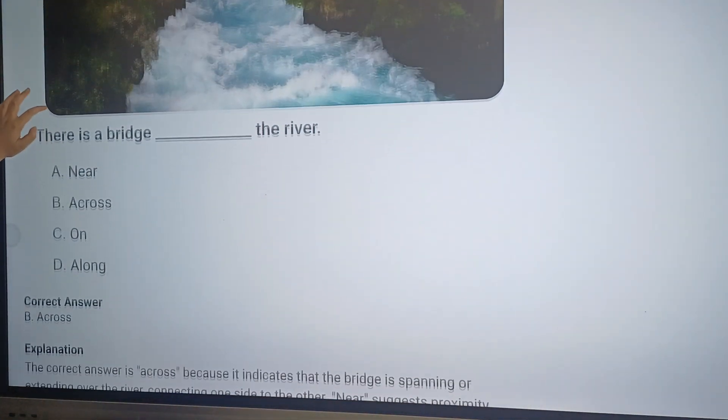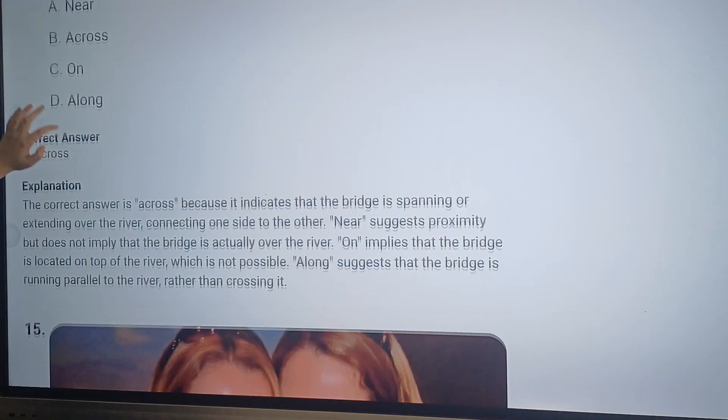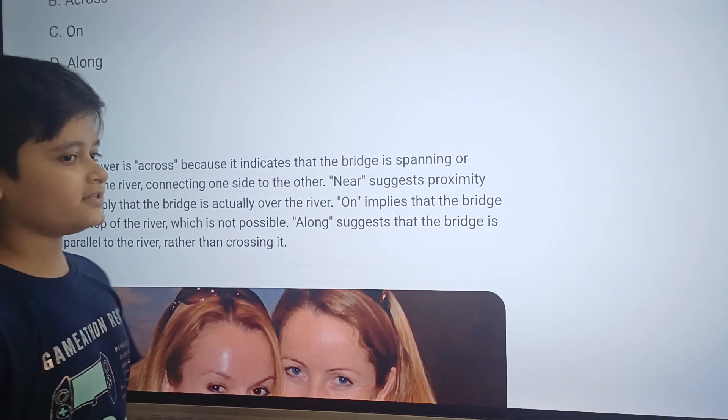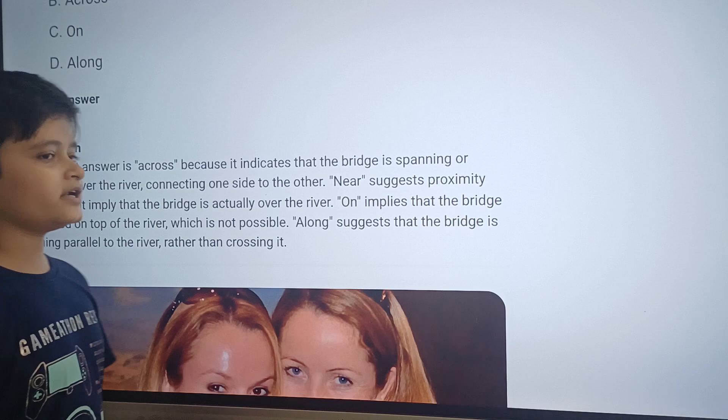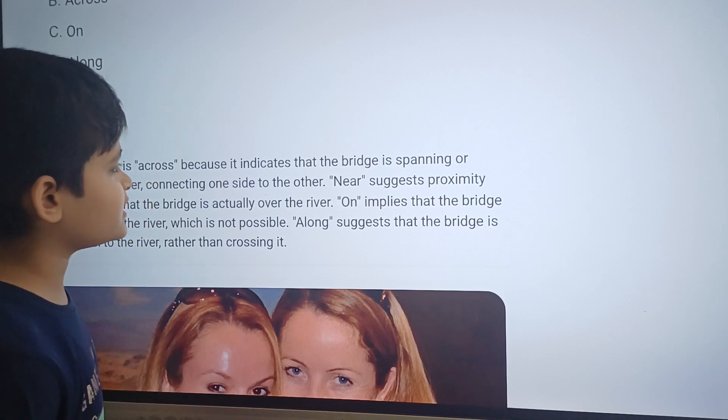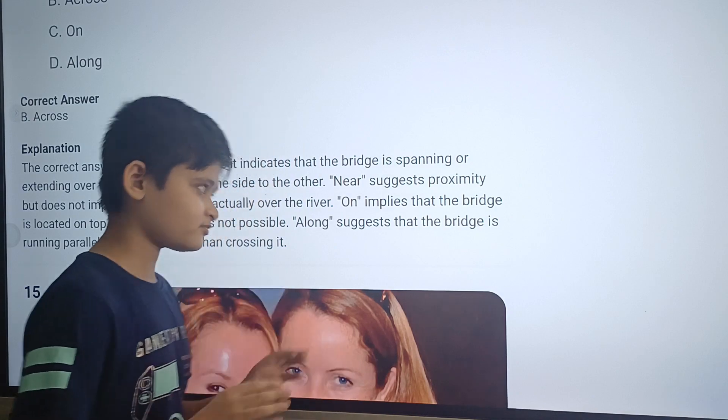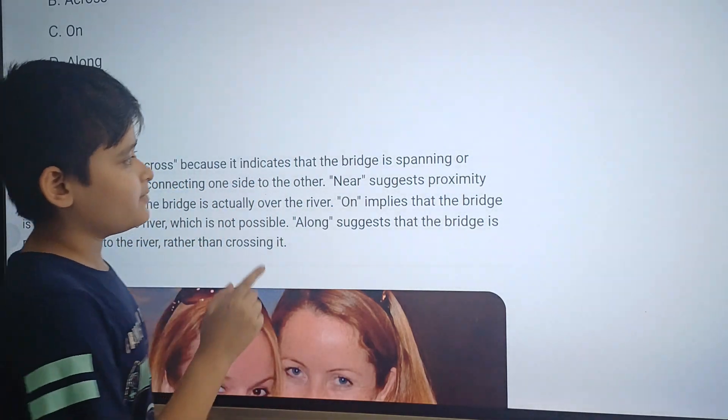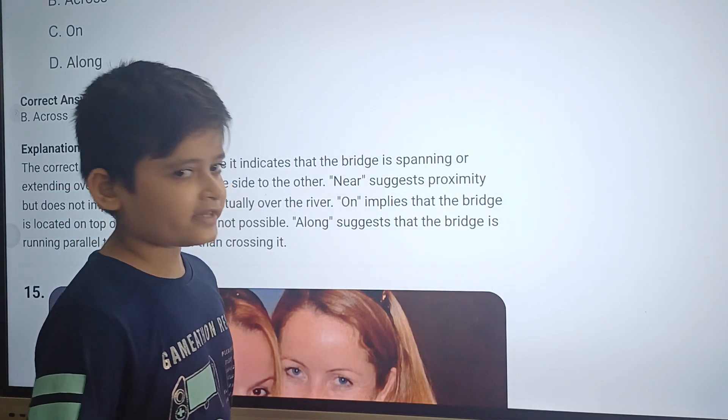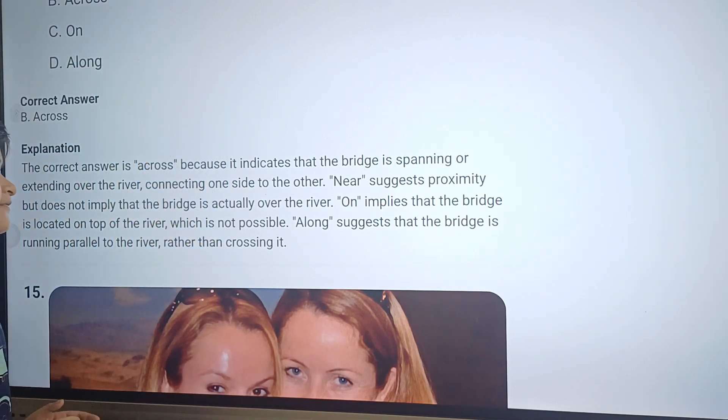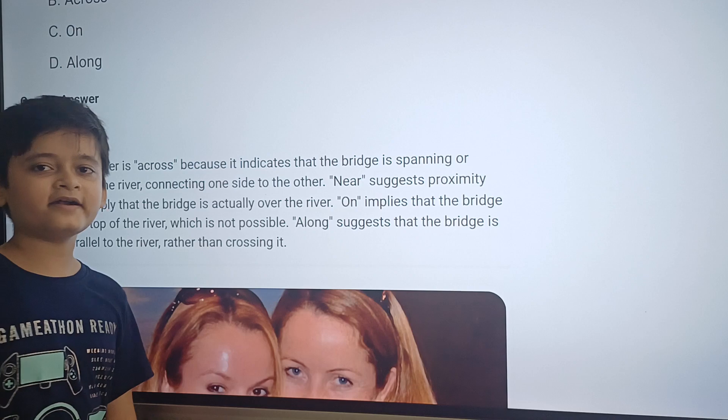Okay, question fourteen. There is a bridge dash the river. The answer will be option B, across. Here is why. Here is the explanation: The correct answer is across because it indicates that the bridge is spanning or extending over the river, connecting one side to the other. Near suggests proximity but does not imply that the bridge is actually over the river. On implies that the bridge is located on top of the river, which is not possible. Along suggests that the bridge is running parallel to the river rather than crossing it.